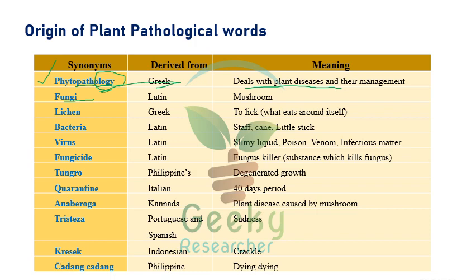Fungi is a Latin word meaning mushroom. Lichen is a Greek word meaning 'to lick' or 'that which eats around itself.' Bacteria, virus, and fungicide are Latin words. Bacteria means 'staff' or 'little stick.' Virus means 'slimy liquid,' 'poison,' 'venom,' or 'infectious matter.' The term virus was coined by MJ Beijerinck, who is also considered the father of plant virology.